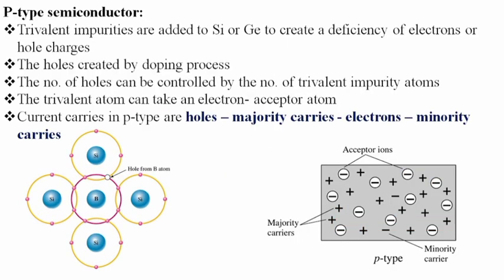For P-type semiconductor, trivalent atoms such as boron or aluminium are added to silicon or germanium to create a deficiency of electrons, or holes. The holes are created by the doping process. The number of holes in the P-type semiconductor can be controlled by the number of trivalent impurity atoms, and they are called acceptor atoms. In P-type material, holes are the majority carriers and electrons are the minority carriers.